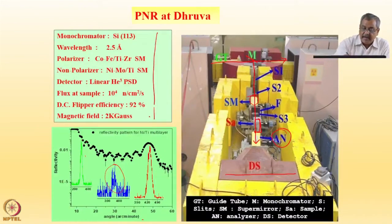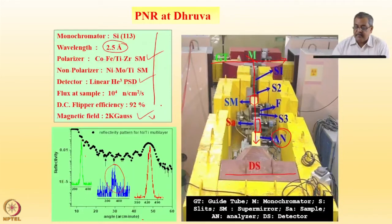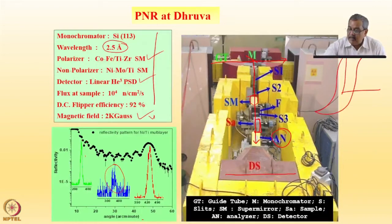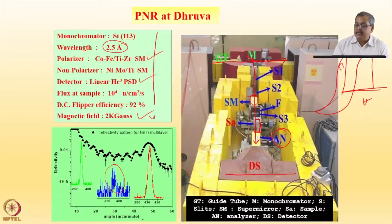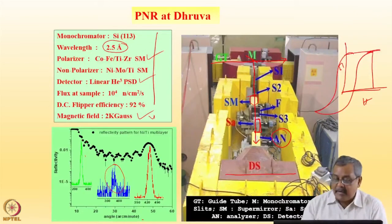At the moment these specifications are slightly changed. The wavelength we have gone up to 3 angstrom. It's a cobalt-iron-titanium-zirconium supermirror. We also have a non-polarizer supermirror. The detector is a linear helium-3 detector. We have a DC flipper neutron beam flipper with an efficiency of 92 percent, and we have a 2 kilogauss permanent field on the sample to magnetize it. Usually thin films have low saturation magnetization in their hysteresis loops. We should saturate the thin film so that the magnetization is aligned in one direction.